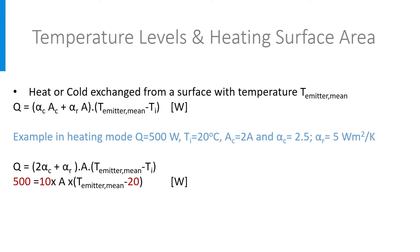This equation gives us some degrees of freedom. At constant heating capacity Q, we can compensate a lower mean temperature of the emitter by a larger surface A. So we can choose many different combinations of radiator size A and average radiator temperature T emitter mean.